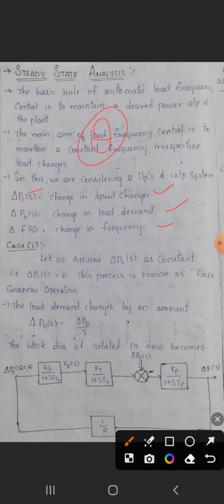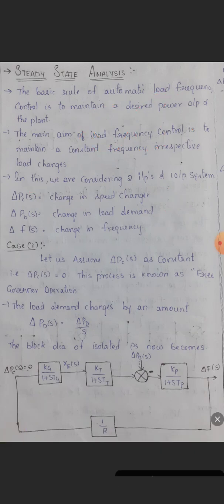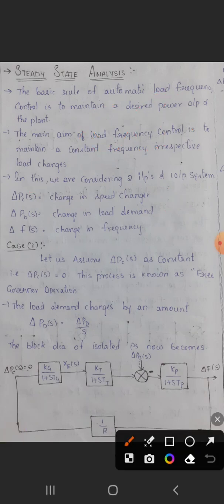Here we have two cases. Steady state analysis covers approximately four pages, but once we have the isolated block diagram, it becomes easy to calculate. Let us now derive it. In Case 1, let us assume delta PC as constant.